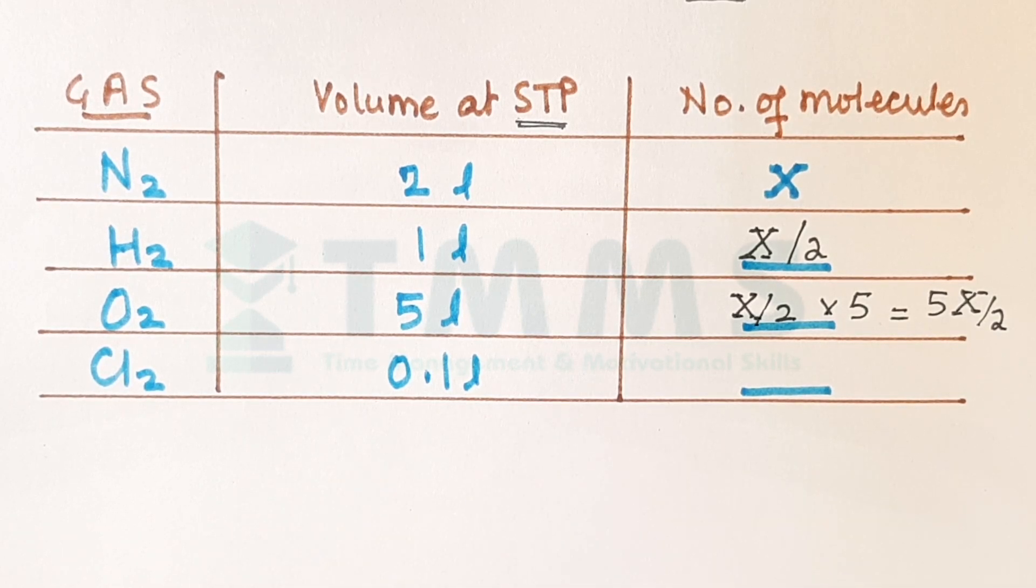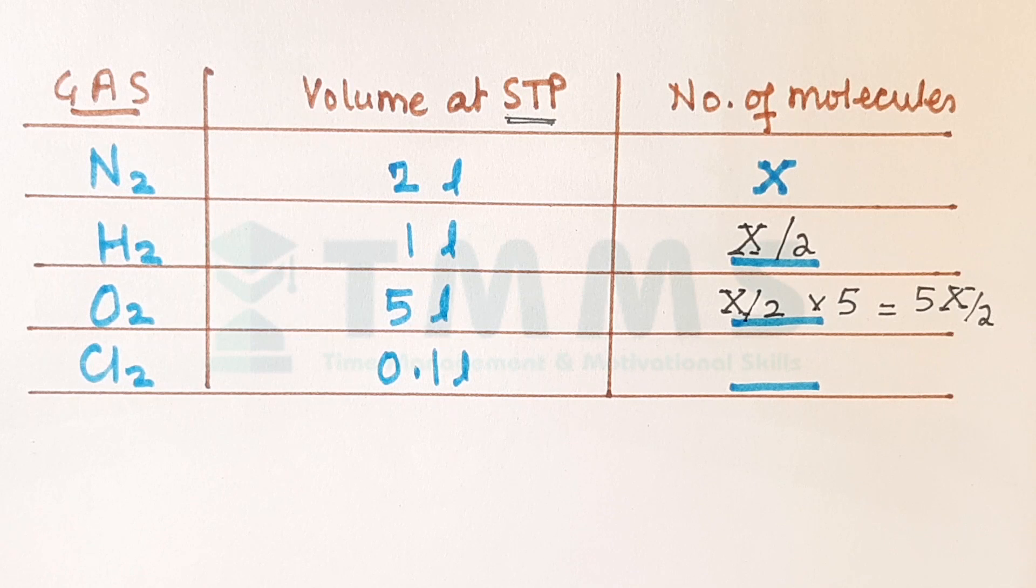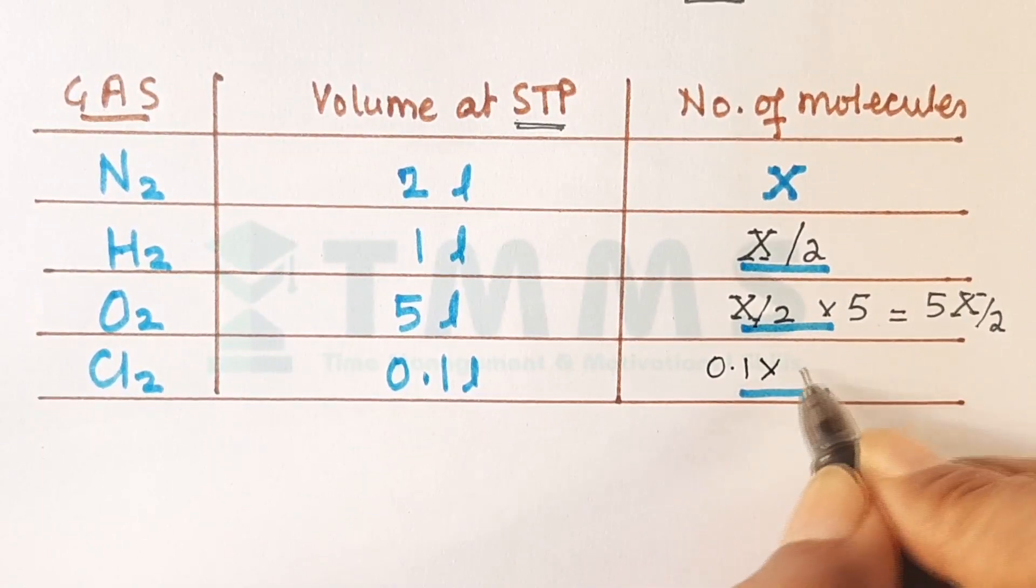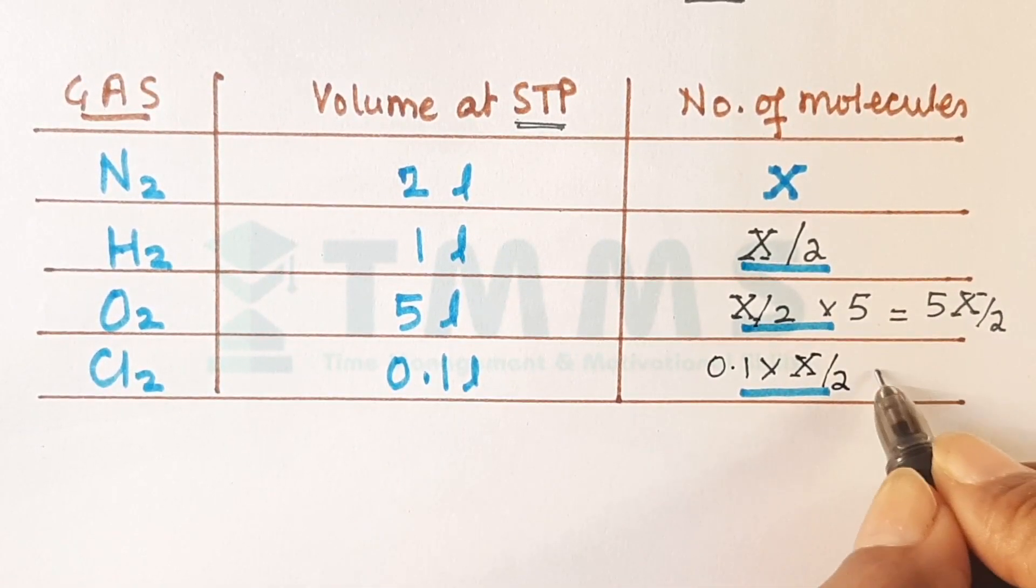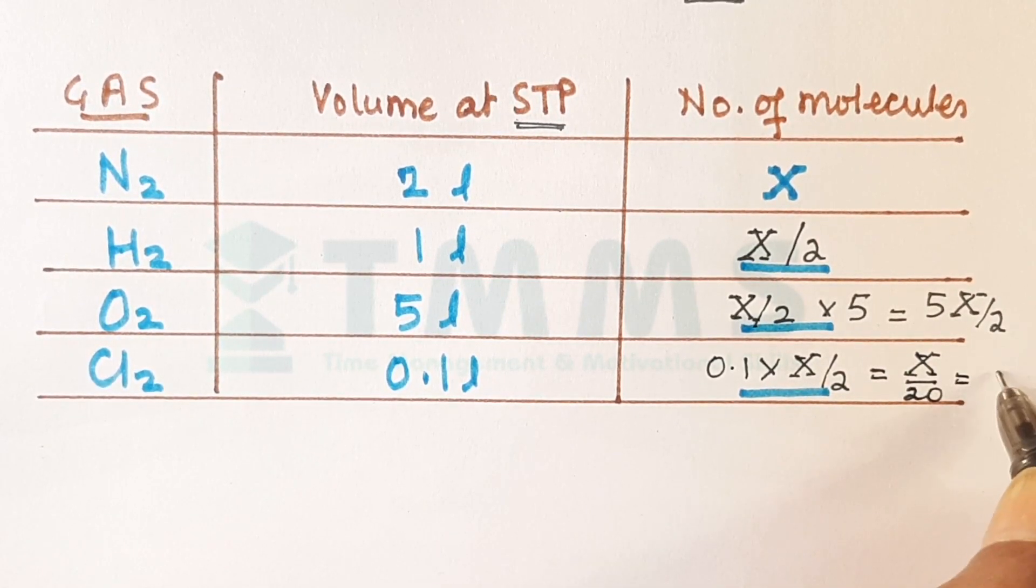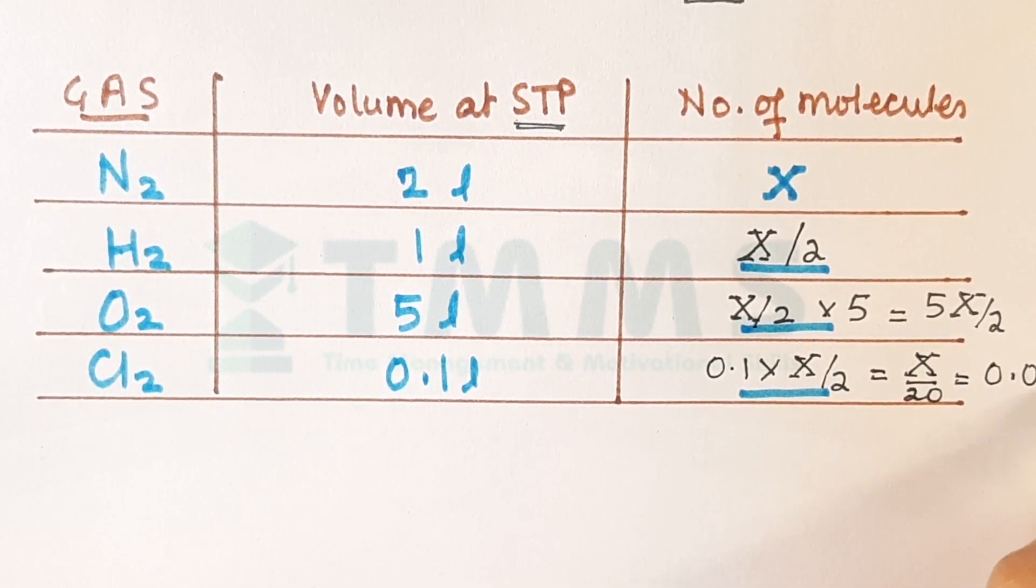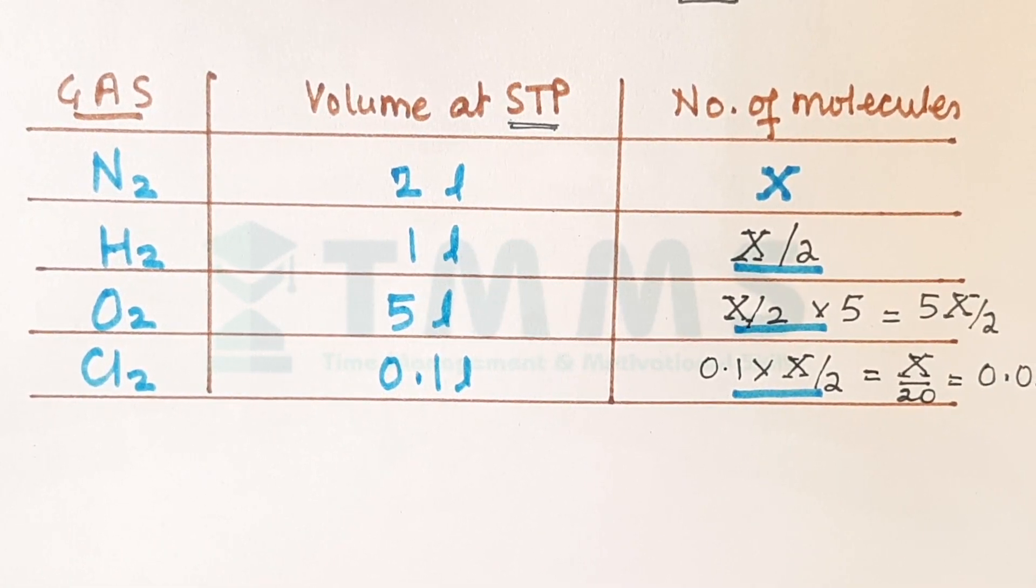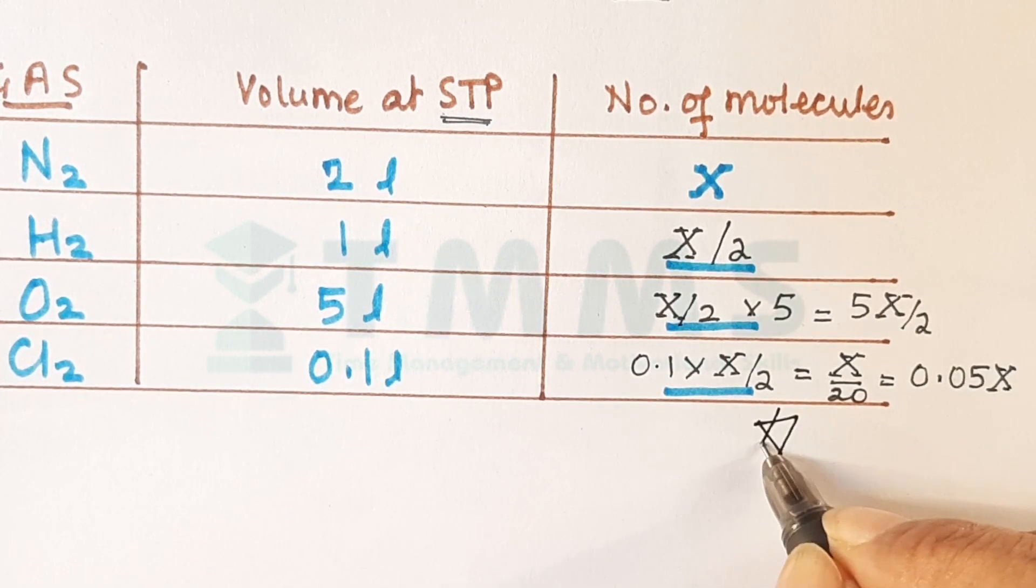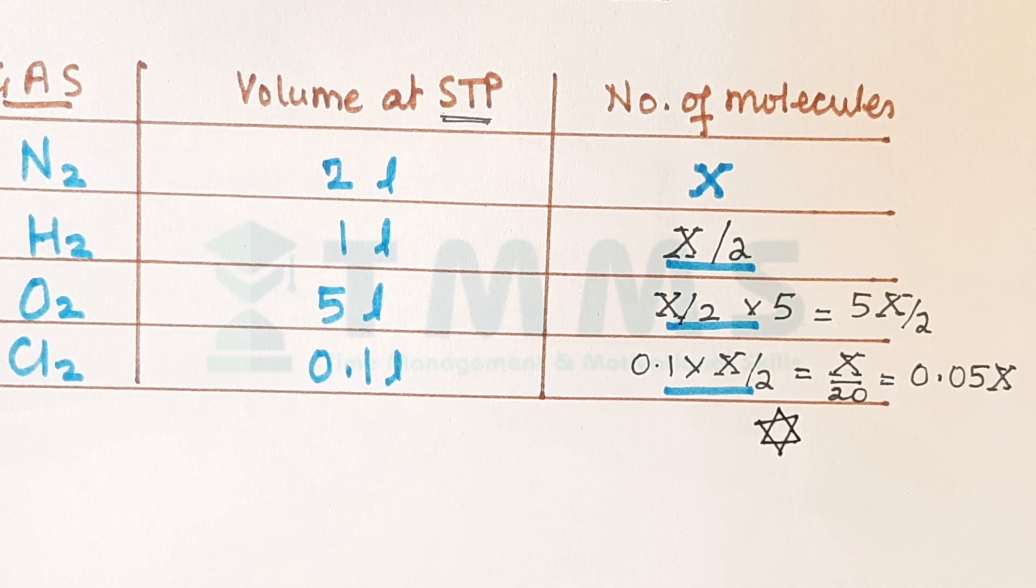Now this one you are going to do on your own and let's see how fast you can get it. Pause this video. Did you get this? It is 0.1 multiplied by x upon 2 and that becomes x upon 20 or you can write it as 0.05x. Got that? All right. Give yourself a star if you got that.